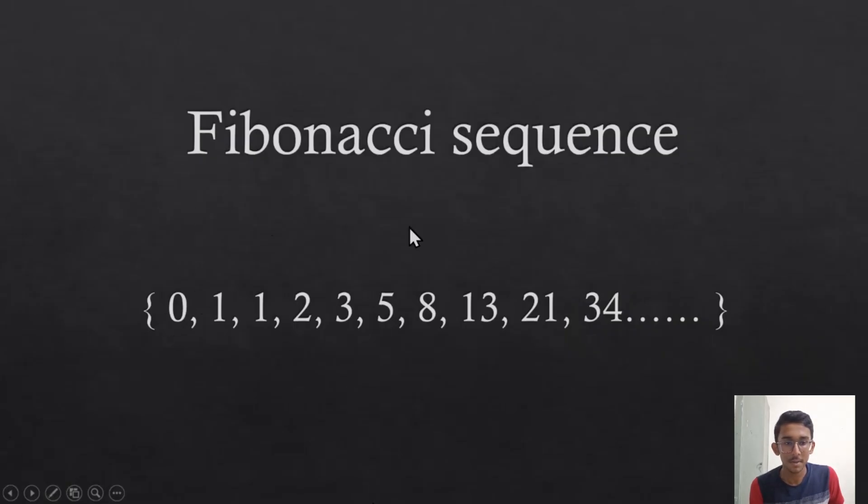So let's discuss the Fibonacci sequence first. The Fibonacci sequence goes as 0, 1, 1, 2, 3, 5 and so on. Basically, the first two terms are predefined, 0 and 1.